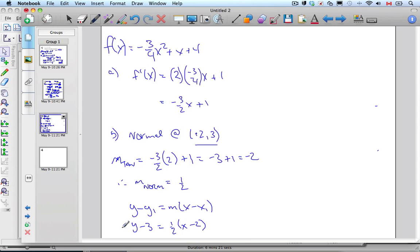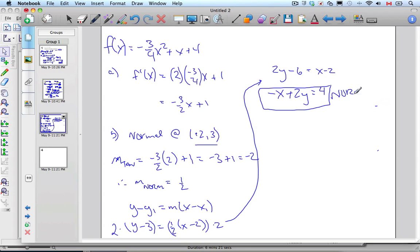To get rid of my fraction, I'm going to multiply both sides of the equation by 2. Then I get 2y minus 6 equals x minus 2. Bring the x over, I get negative x plus 2y is equal to, bring the 6 over, add 6, is equal to 4. This is my normal equation.